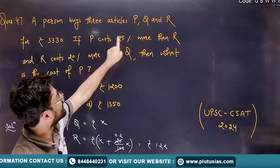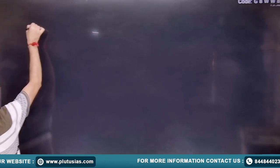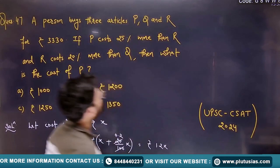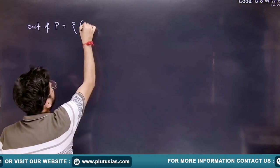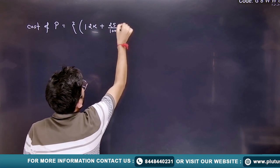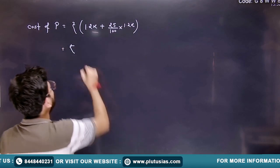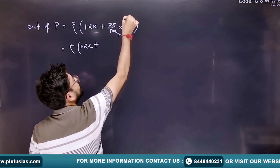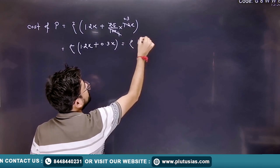The cost of P is 25% more than R. R is 1.2X, so cost of P = 1.2X + 25% of 1.2X. Simplifying: 25% of 1.2X is 0.3X, so 1.2X + 0.3X = 1.5X. So the cost of article P is 1.5X.